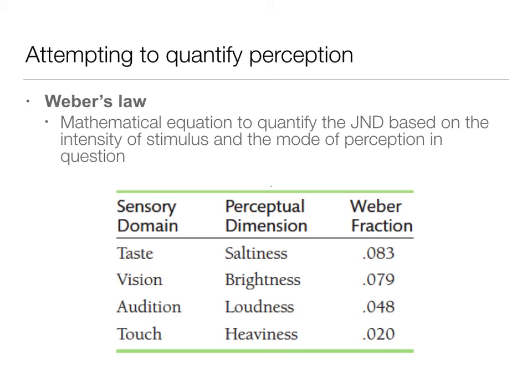There's a different Weber fraction for each mode of perception. If you're trying to do touch and look at the perceptual dimension of heaviness, you would use 0.02. So this constant is multiplied by the intensity of the stimulus. Weber was kind of the first to start to quantify this, and he did this back in the 1860s.